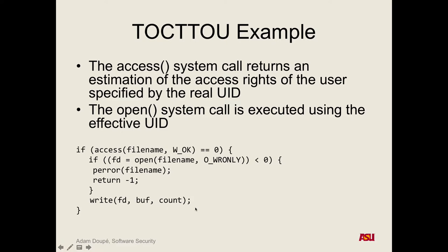So what's the key problem? How do you fix this? Open uses our effective user ID — it's using the setUID permissions. Because the program is executing as root, it says root can open this file.